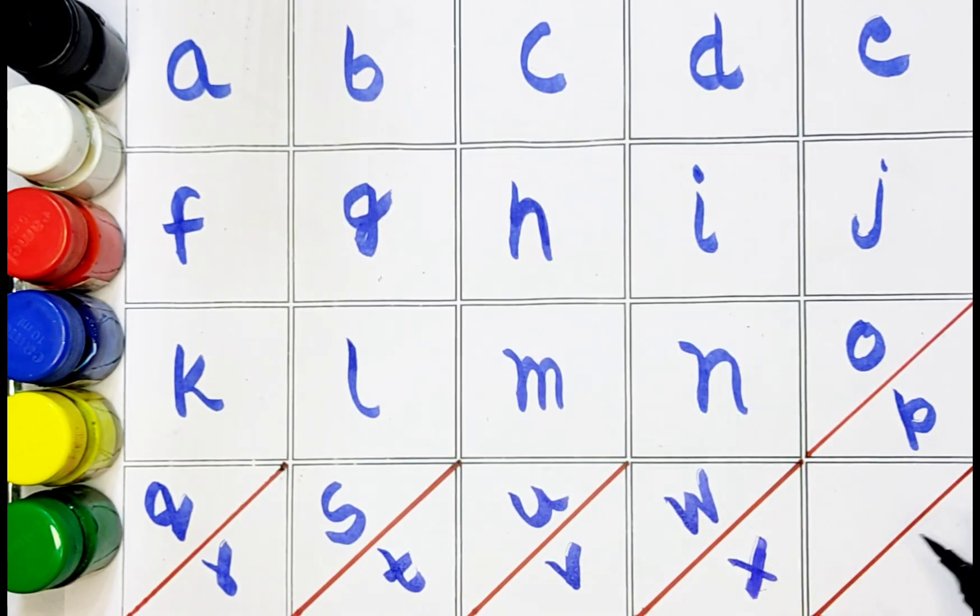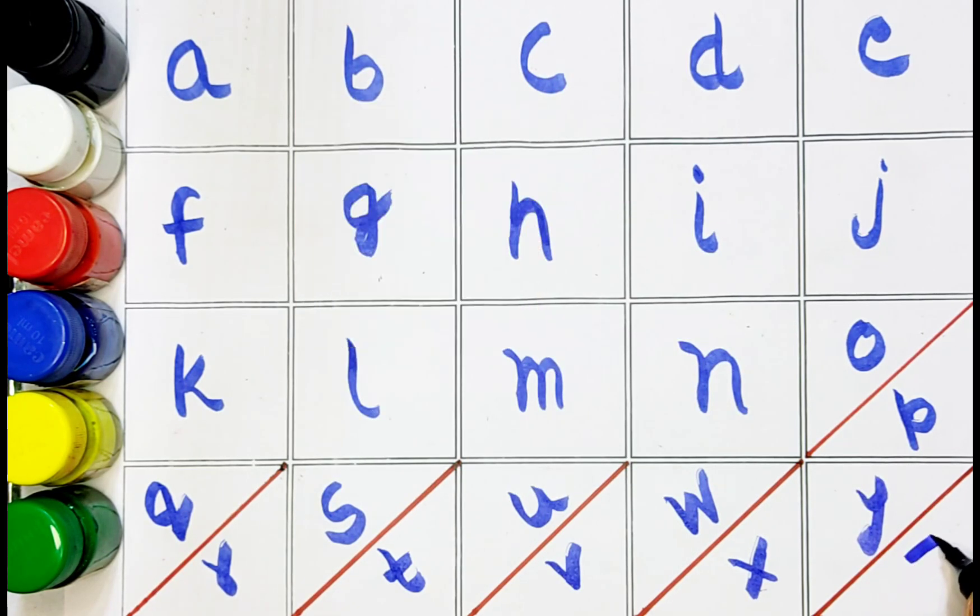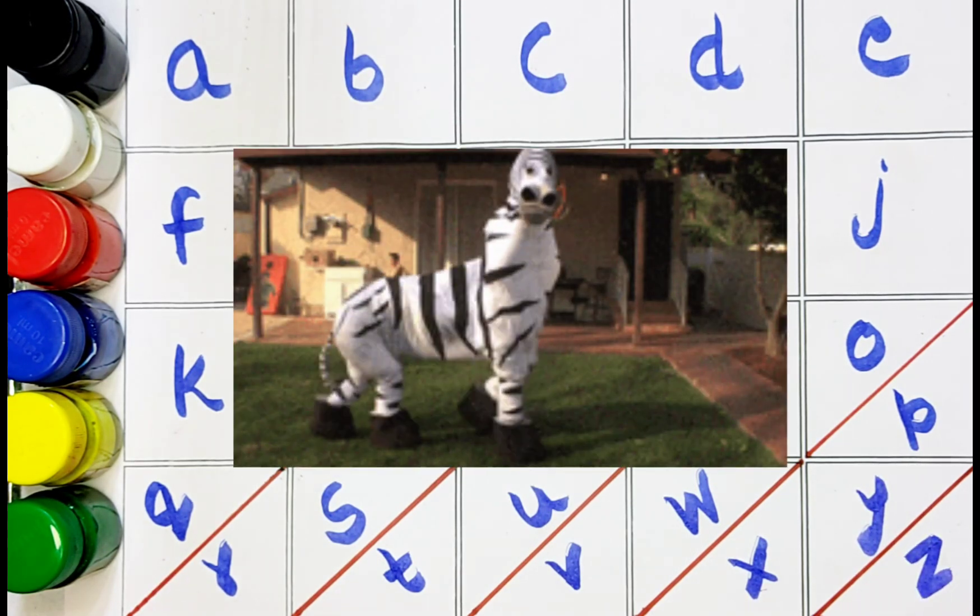X. X for x-mas tree. Y. Y for yak. Z. Z for zebra.